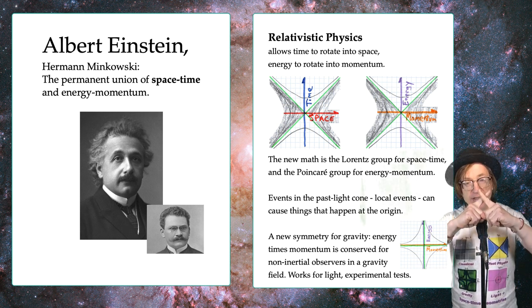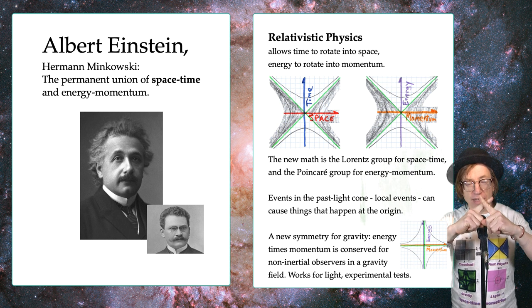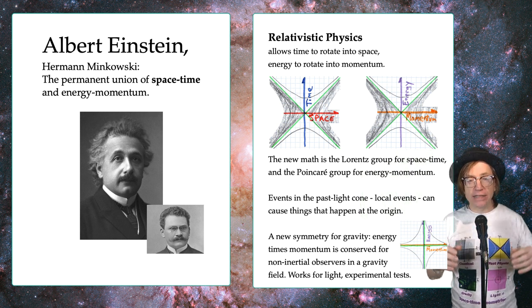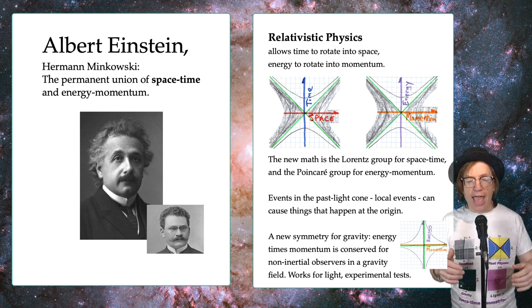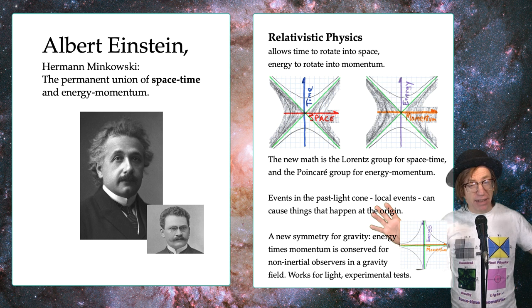On the angles there, that's where light is, and it divides the world into events in the past light cone which can influence what happens at the origin and the future light cone. And the stuff that's outside it...